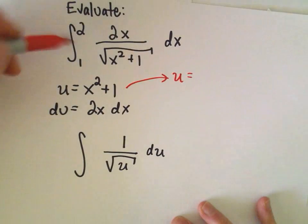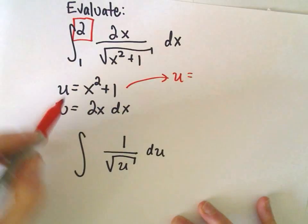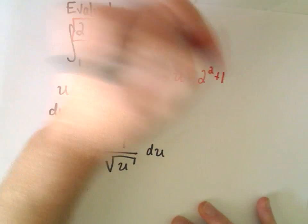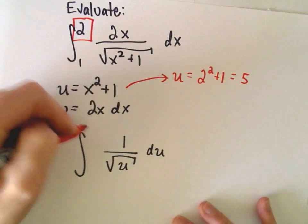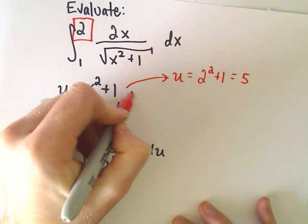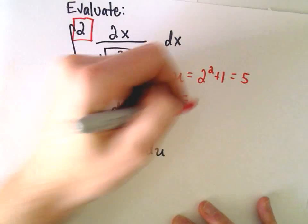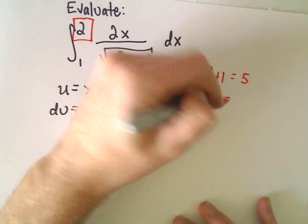The upper limit of integration was when x equaled 2. So in that case, u would equal 2 squared plus 1, which would be 5. The lower limit of integration, originally it was when x equals 1, so we would have 1 squared plus 1, which is 2.